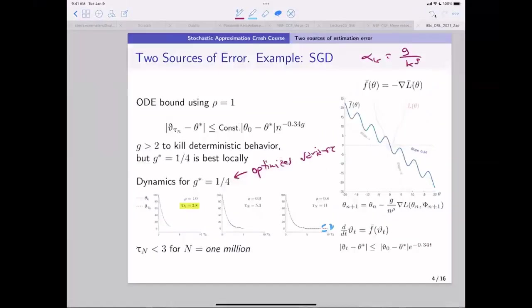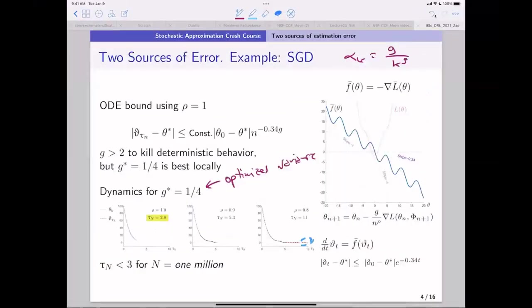You don't want to use G equals 1/4. That's ridiculous. But it all depends on the initial condition. If you knew that you were near 0, you can initialize there and the bias wouldn't be so bad. So is that message clear? It's bias variance trade-off.